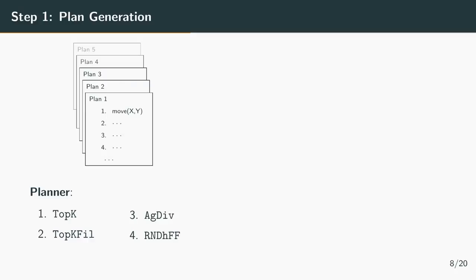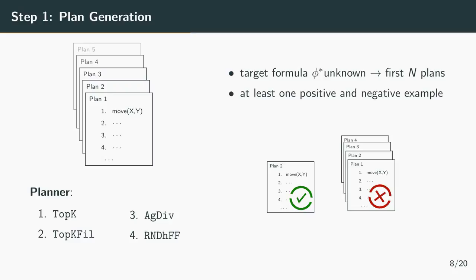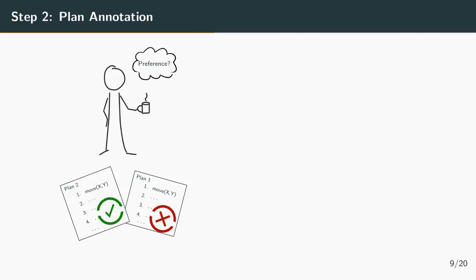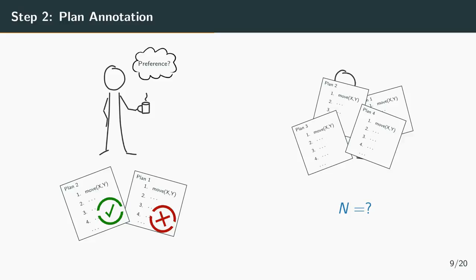In the next section I want to focus on specific constraints we have to deal with in every step of our learning procedure. First of all the planners which generate the example plans don't know the target formula and cannot tailor the plans to the target formula. Therefore we simply select the first N plans the planner generates. An additional constraint we have to keep in mind is that for the learning phase it's necessary that we have at least one positive and one negative example. For the annotation step there is not directly a hard constraint, but we definitely don't want to overwhelm the user with too many plans he has to annotate. So one question we want to answer in the following evaluation is how many plans do we actually need to learn the target formula in the learning step.